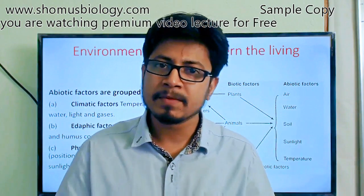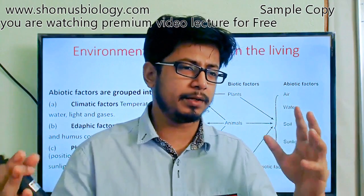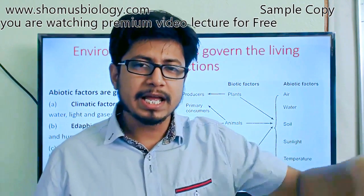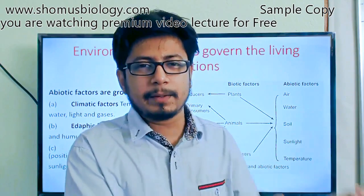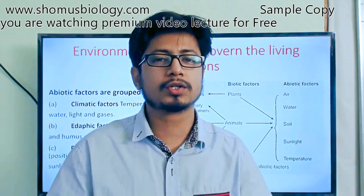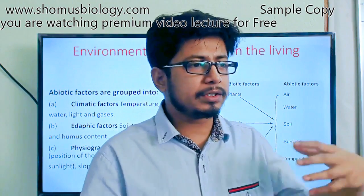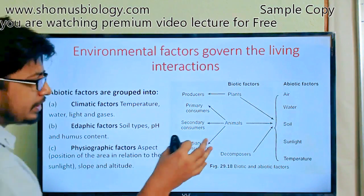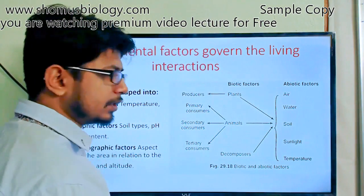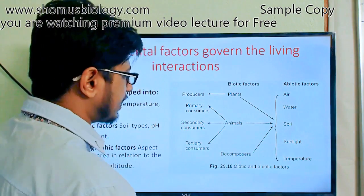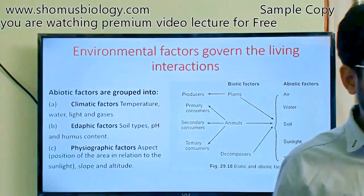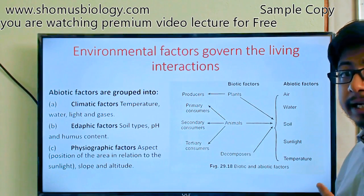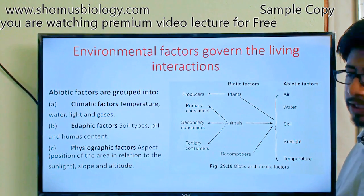Every living thing — plants or animals — is made up of lipids, proteins, and carbohydrates, which are also present in abiotic components. A rock and a human share the same fundamental units like iron and salts. Decomposers complete the cycle by returning these materials to the environment, enabling biogeochemical cycles such as the phosphorus, nitrogen, carbon, and sulfur cycles.